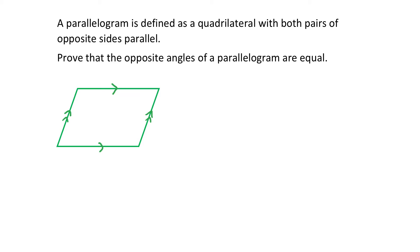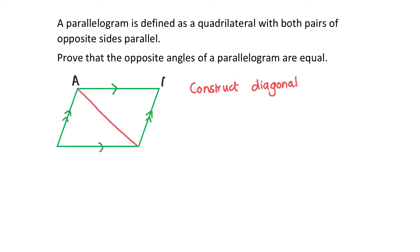You might have already learned that the opposite angles of a parallelogram are equal, but we're going to ignore what you've learned and rather try to prove that it's true. Something isn't true because your math teacher says it's true — in geometry, things are true because they can be proved logically. So we're going to construct a diagonal. Let's call the quadrilateral ABCD, and the diagonal we've constructed is AC.